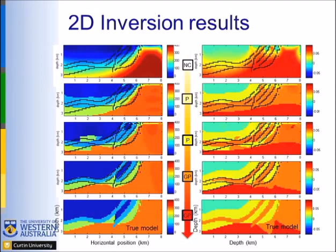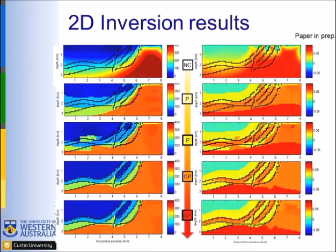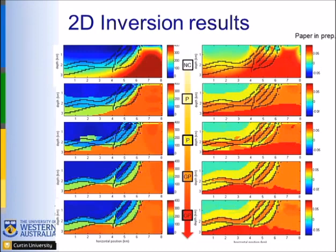When applying joint inversion with petrophysics conditioned by geology — everything integrated together — comparing gravity results, you better extend the blue dipping body and recover the interface. On the magnetic side, the banana-shaped dipping body is improved. Some structures are retrieved through cross-talk between gravity and magnetics, pushed by the complementarity between the two methods in the petrophysical domain.